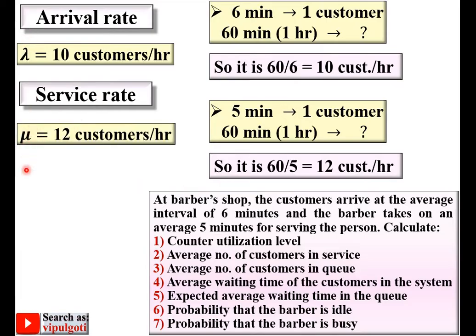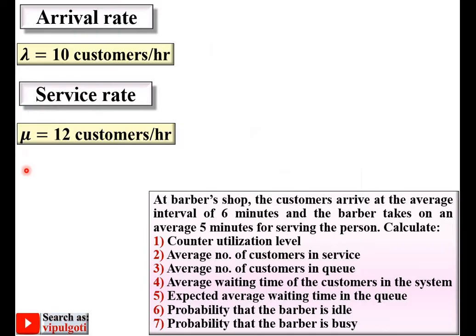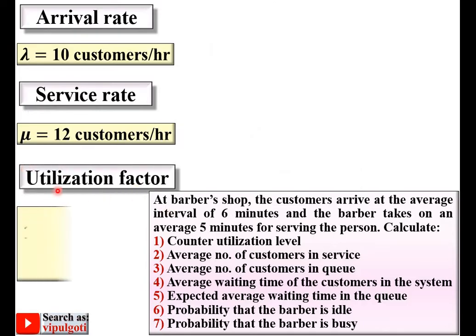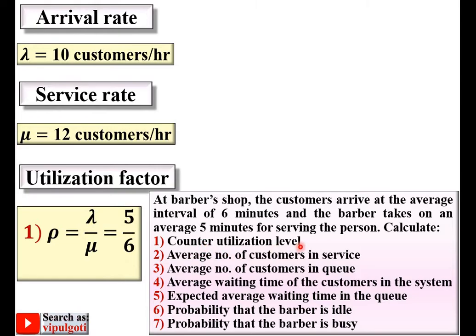Once you have mu and lambda, you can find the utilization factor — that is the first question: counter utilization level. The formula is rho (ρ) = lambda / mu. Substituting our values gives 10/12 = 5/6, which simplifies to 0.833.